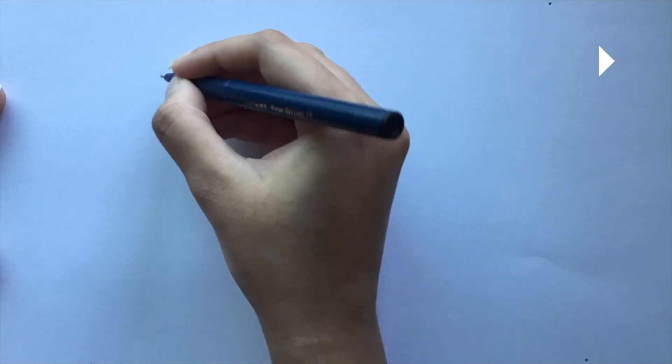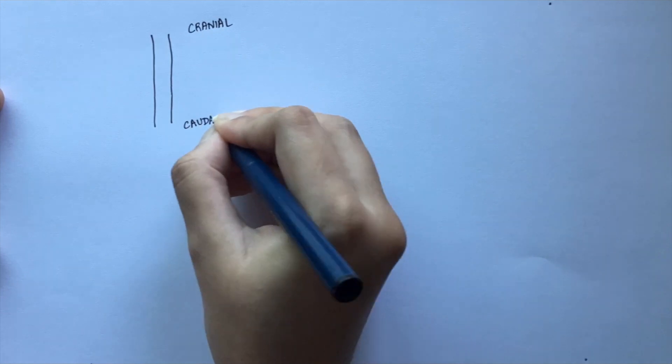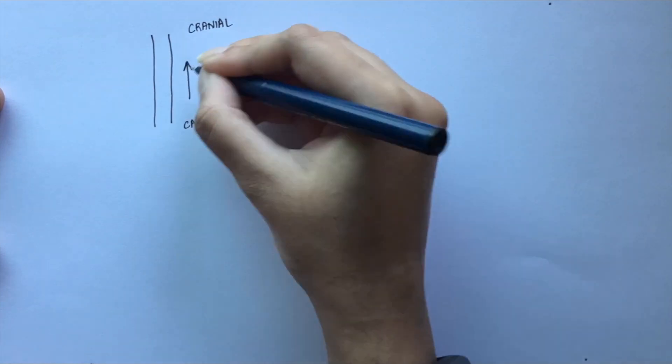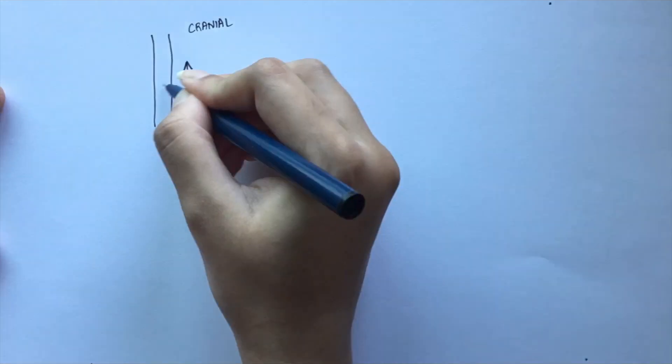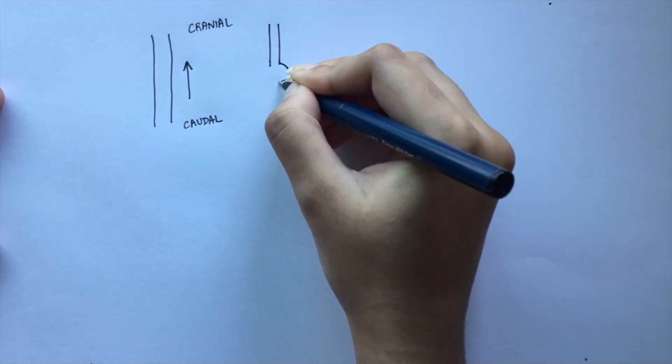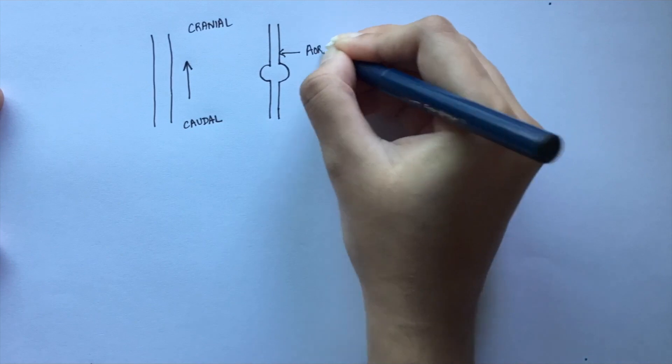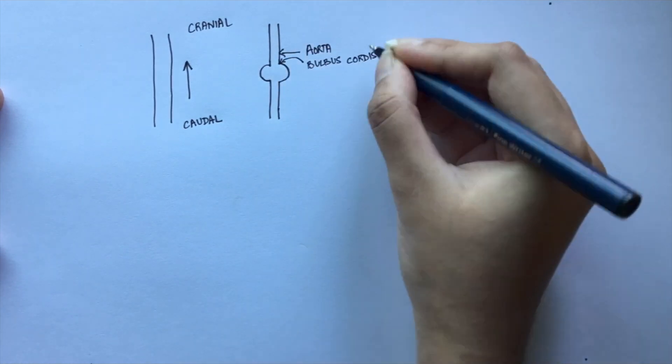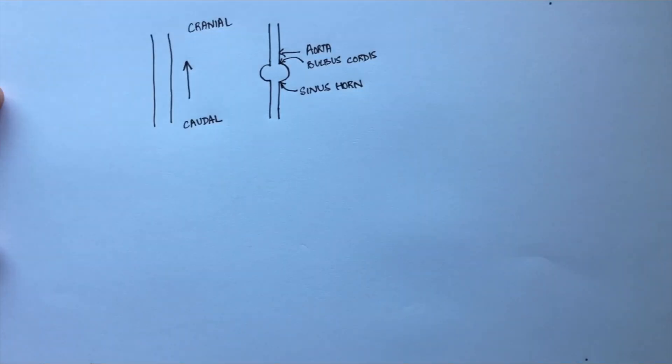When the fetus is developing, the circulatory system is just a tube carrying blood. The blood flows in this direction in order to provide oxygen to the developing brain. As weeks progress, this part of the tube enlarges to form the heart. This portion is called the bulbous cordis and this part is known as the sinus horn.